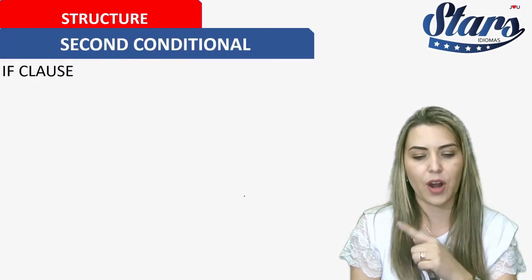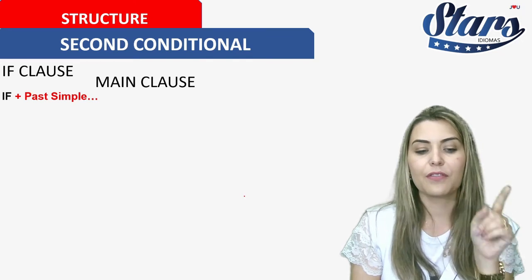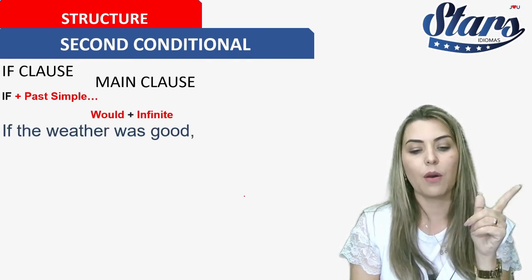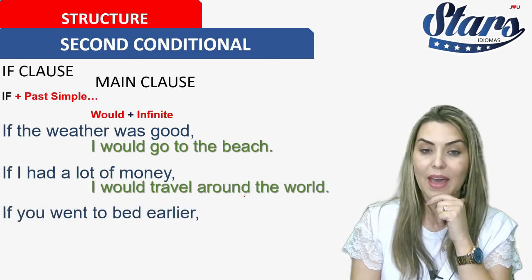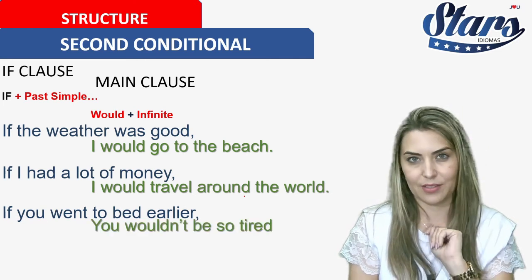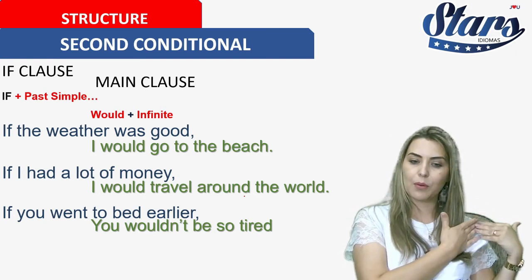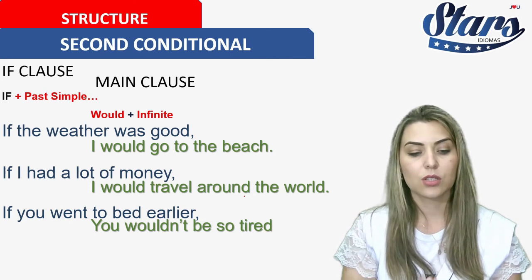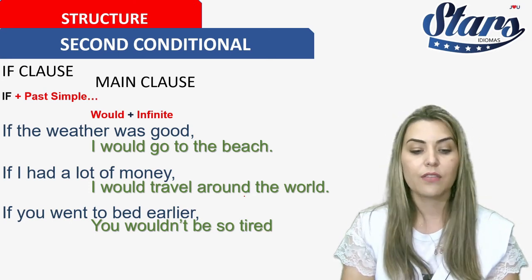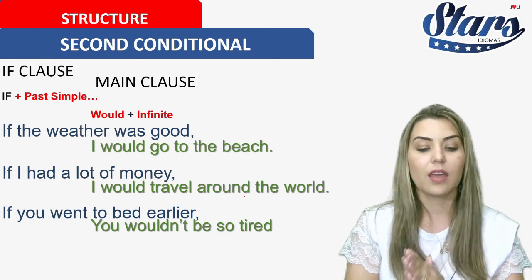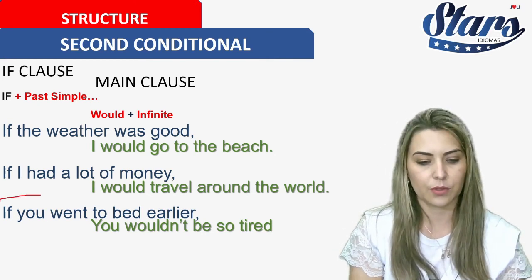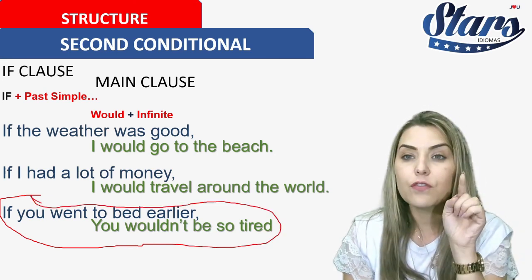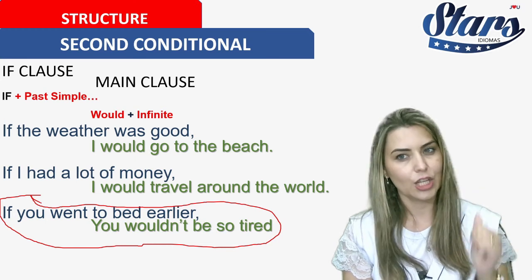The structure of the second conditional: if clause plus main clause. If — past simple — comma — subject — would — infinitive. Examples: if the weather was good, I would go to the beach. If I had a lot of money, I would travel around the world. If you went to bed earlier, you wouldn't be so tired — that's a great one!